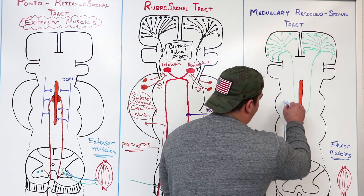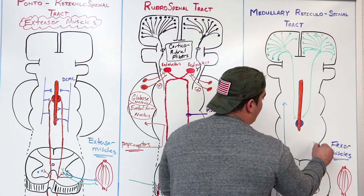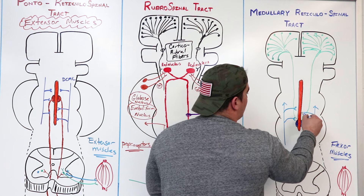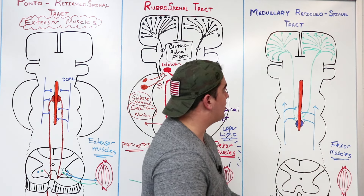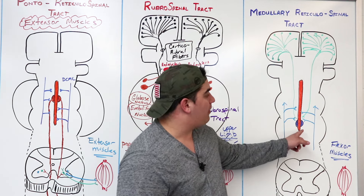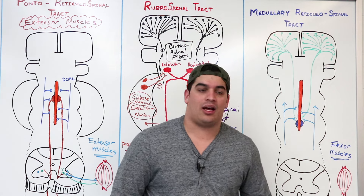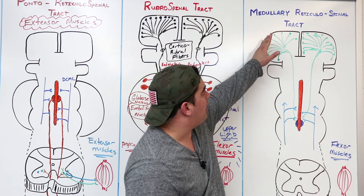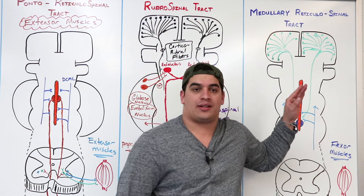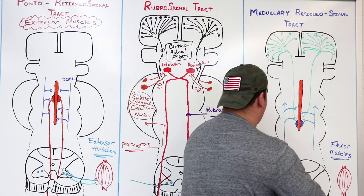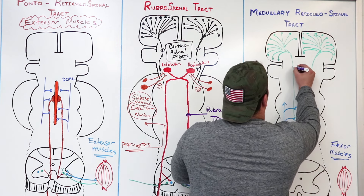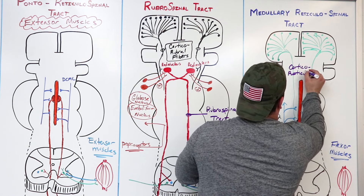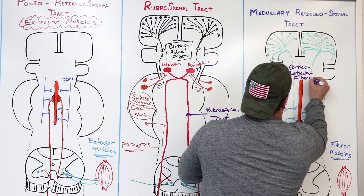There are also ascending tracts, and as those ascending tracts carry sensory information upward, they can give collaterals to the reticular formation. Those collaterals can tell the medullary reticulospinal to send action potentials downward to cause contraction of the flexor muscles. It's under heavy stimulation from the cerebral cortex via these green fibers here — called corticoreticular fibers.